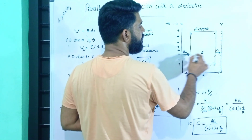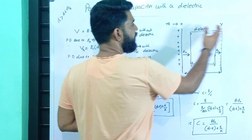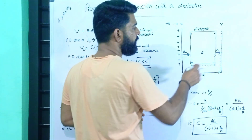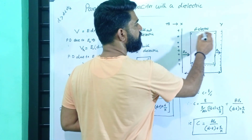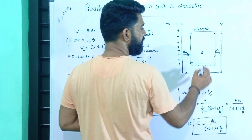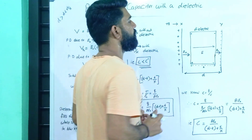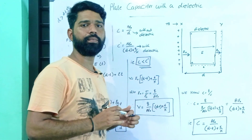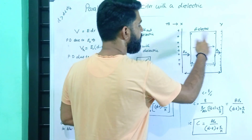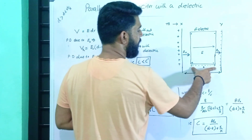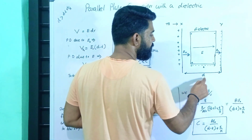In this case, we will produce an electric field. The thickness of the slab is small t, and the distance between plates X and Y is small d.